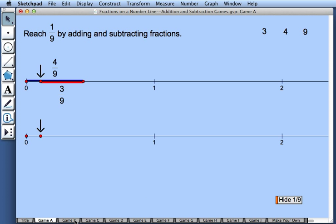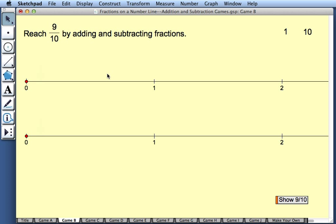Let's look at another game. In game B, our goal is to reach 9 tenths by adding and subtracting fractions. So one thing we could do is to create the fraction 1 tenth, create another fraction 1 tenth, and keep going. We could have 9 of these. That would take a while. Let's see if there's a simpler way.